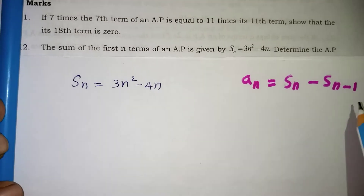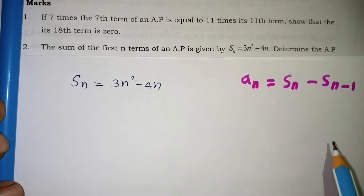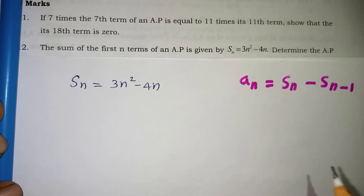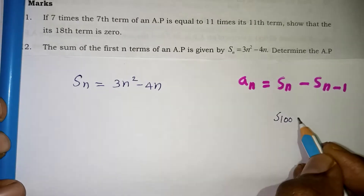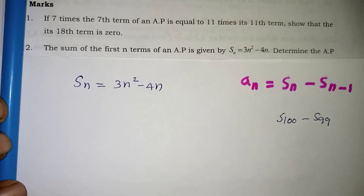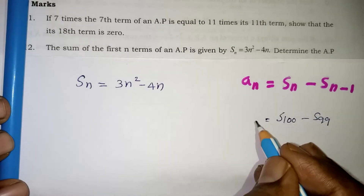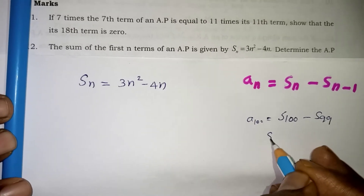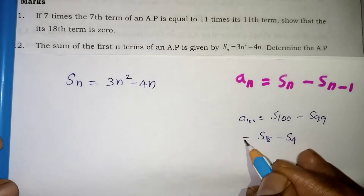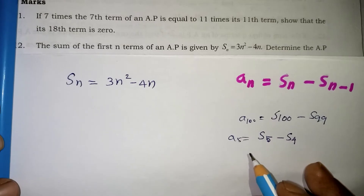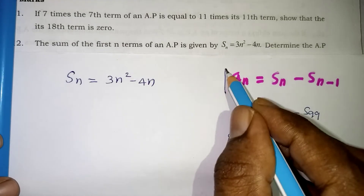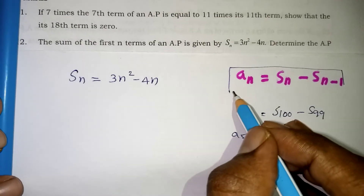The reason this works: for example, if you subtract the sum of 99 terms from the sum of 100 terms, the 100th term alone remains. Same way, subtracting the sum of 4 terms from the sum of 5 terms gives you the 5th term. So AN = SN - SN-1 is the formula to find the Nth term from the sum.